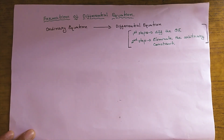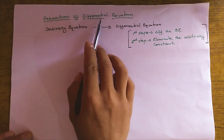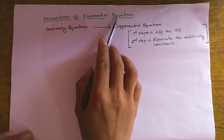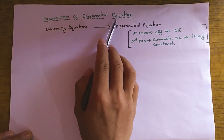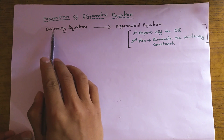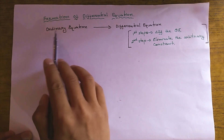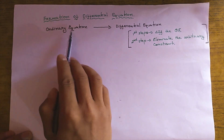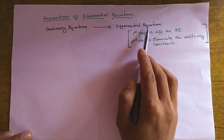This second video is about the formation of differential equations. How do we get a differential equation? If we have an ordinary equation, how do we derive a differential equation from it?